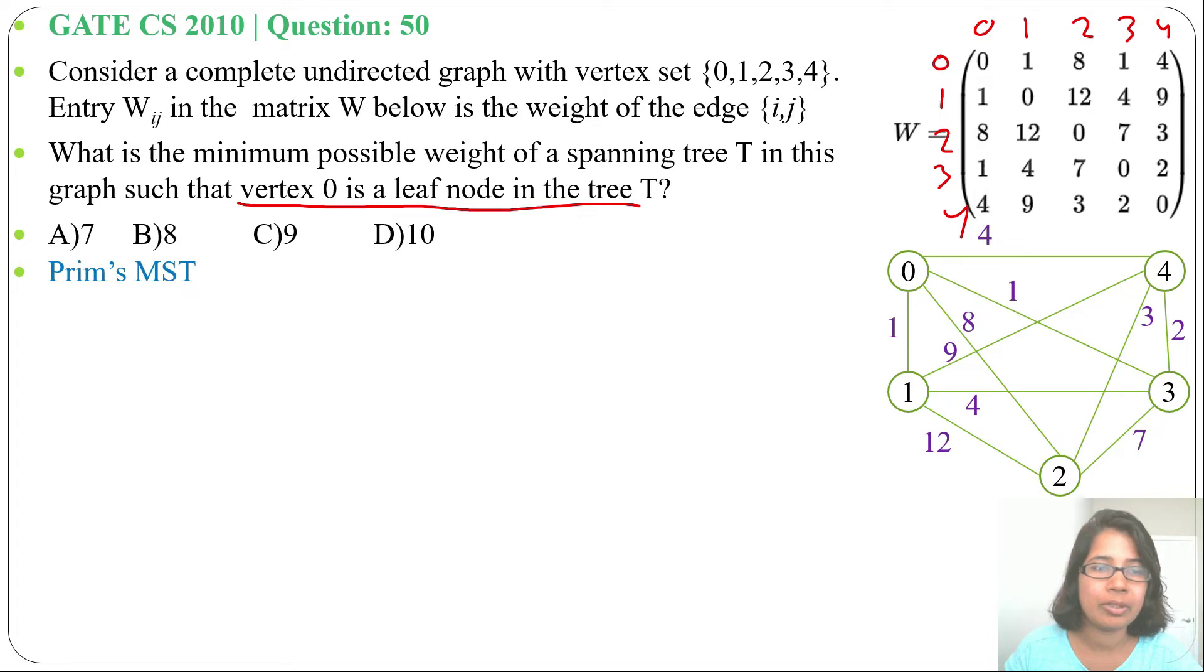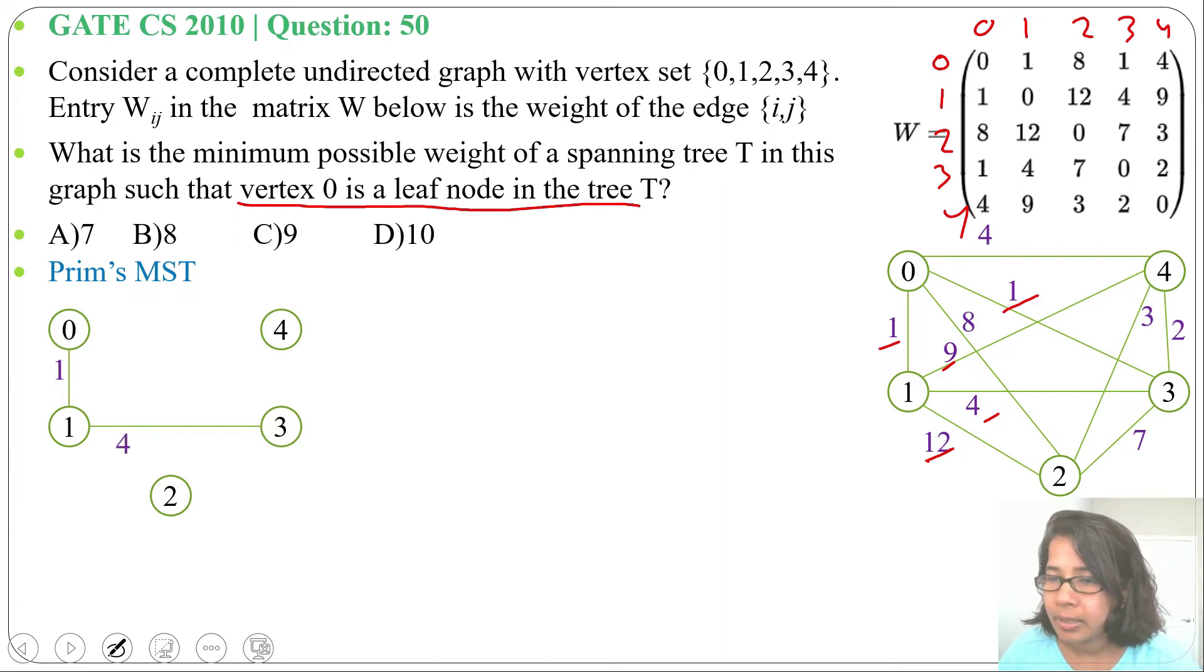Starting with vertex 0, vertices 1, 2, 3, and 4 are adjacent, so we select minimum edges. We got 4 edges for 5 vertices. Now this is the minimum spanning tree. Let me use Kruskal's algorithm.